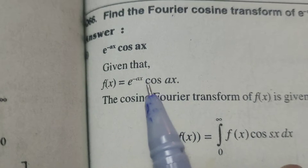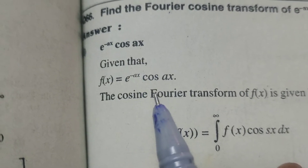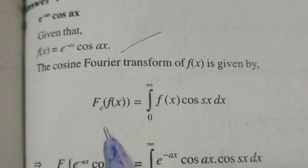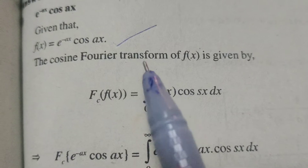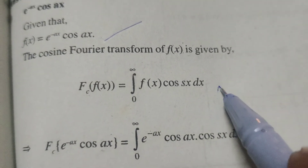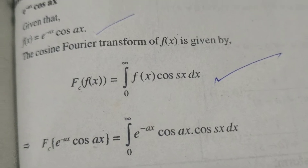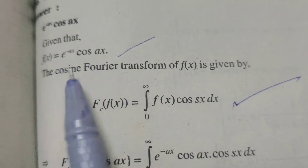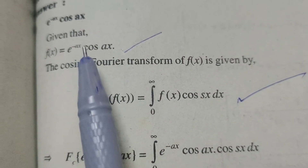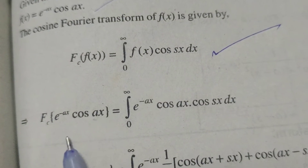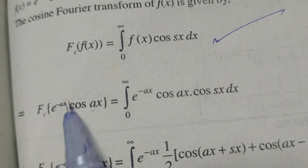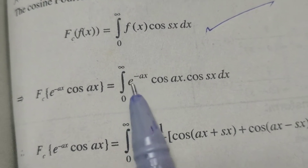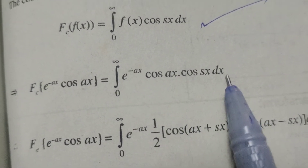Given function: f of x equals e power minus ax cos ax. The Fourier cosine transform of f of x is given by fc of f of x equals integral from 0 to infinity of f of x cos sx dx. This is the formula for the Fourier cosine transform of the function f of x. So, write here fc of e power minus ax cos ax equals integral from 0 to infinity of e power minus ax cos ax cos sx dx.